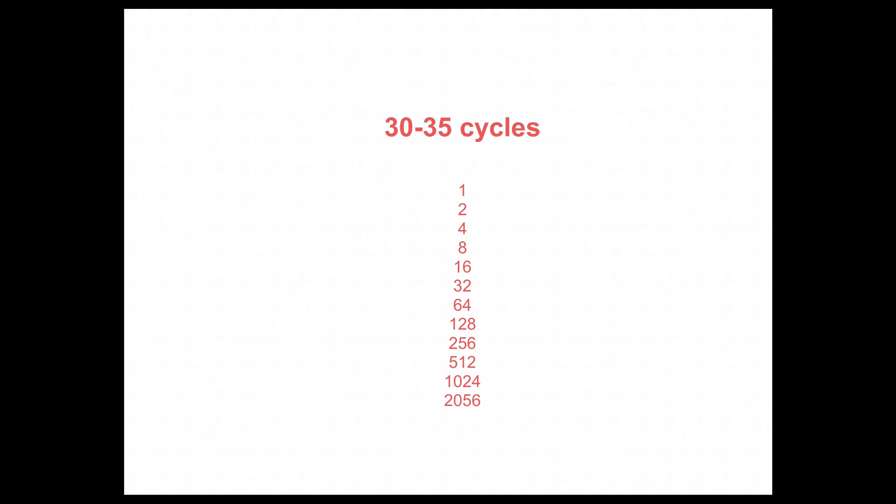So what we've seen is one cycle of PCR: denature, anneal, extend. But really what we would produce in one reaction is 30 to 35 cycles worth of a reaction.